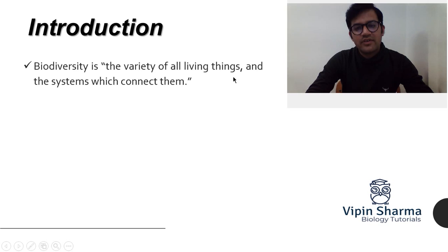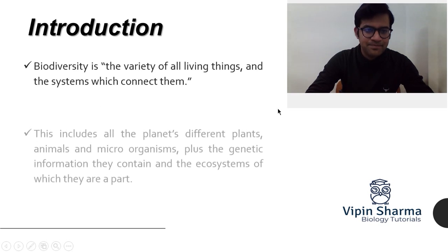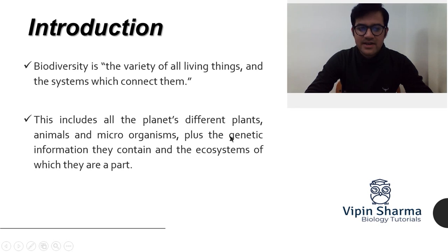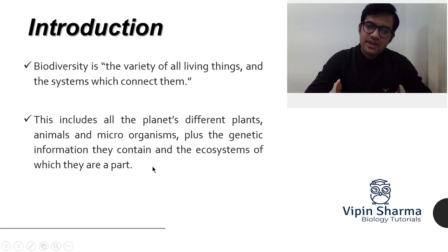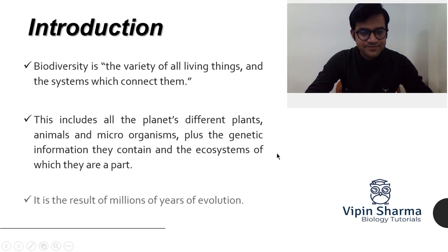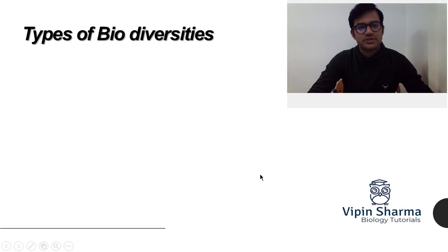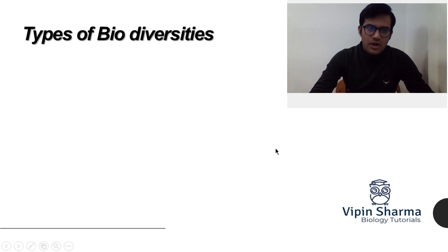The definition: biodiversity is the variety of all living things and the systems that connect them. It includes microorganisms, animals, different types of plants, the genetic information they contain, and the ecosystems as well. This is the result of millions of years of evolution.